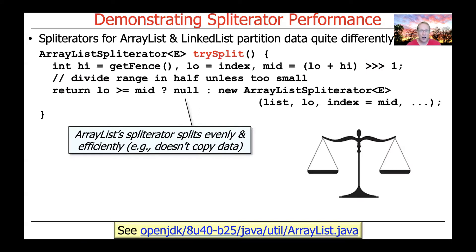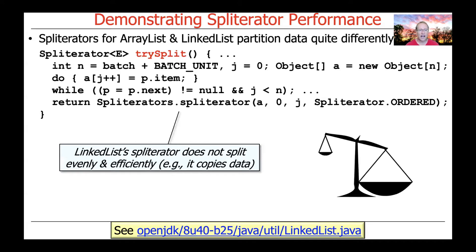The trySplit method for ArrayList splits things evenly and efficiently. It's trivial and fast to compute the midpoint, and it doesn't do any data copying — it just splits in half and keeps a reference to the underlying array. In contrast, the trySplit method for LinkedList doesn't split evenly or efficiently, because it has to copy a bunch of data, which is extra overhead not incurred by the ArrayList implementation.